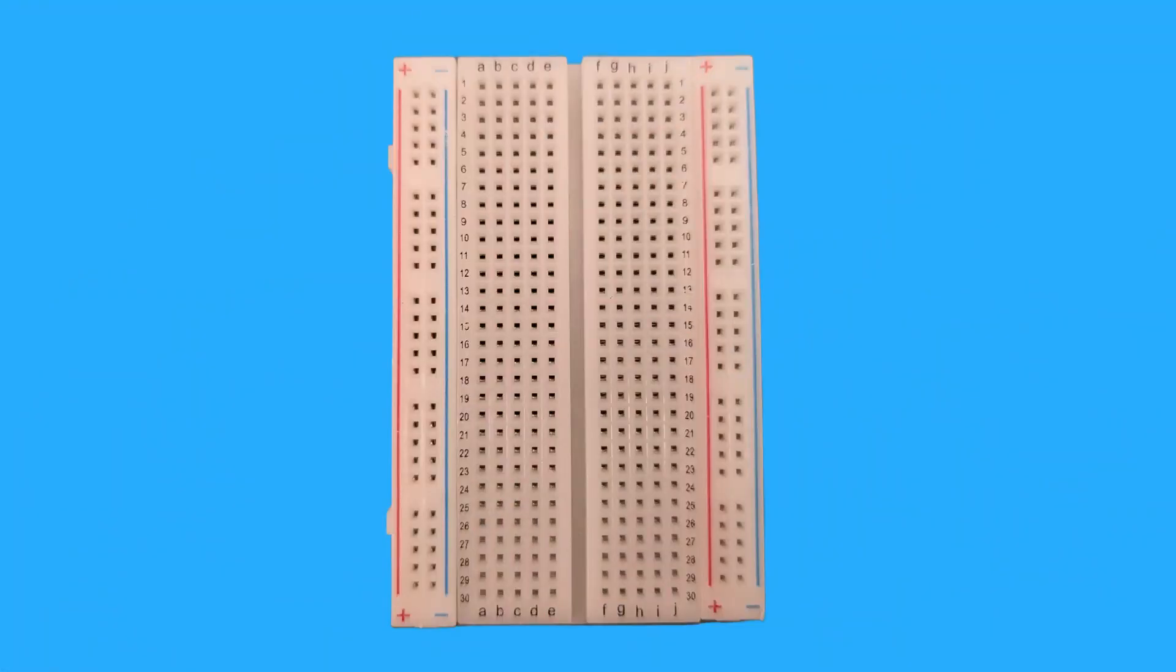Let's zoom in on the breadboard's layout. The holes are arranged in rows and columns. The rows are labeled with letters, A, B, C, etc. And the columns with numbers, 1, 2, 3, and so on.